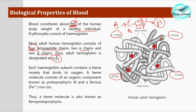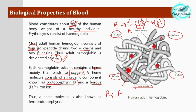Each hemoglobin subunit consists of a heme moiety, which binds to oxygen. The whole heme molecule does not bind to oxygen — only the heme moiety does. A heme molecule consists of an organic component known as protoporphyrin IX and a ferrous iron. Thus, the heme moiety is composed of two major components: ferrous iron and protoporphyrin IX, and a heme molecule is also known as ferroprotoporphyrin.